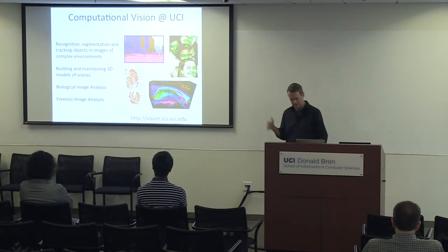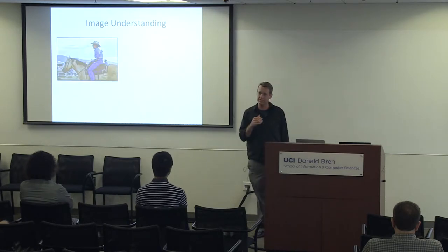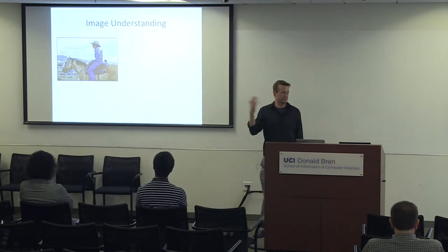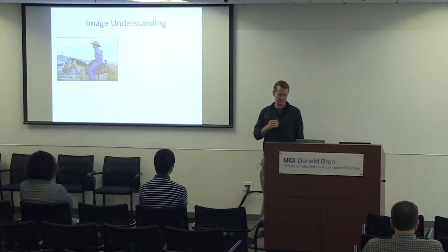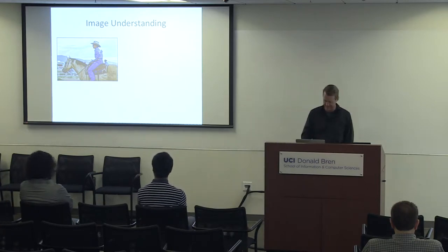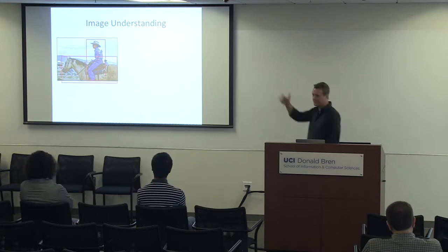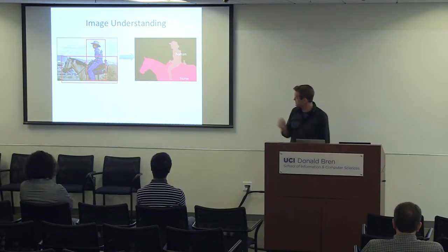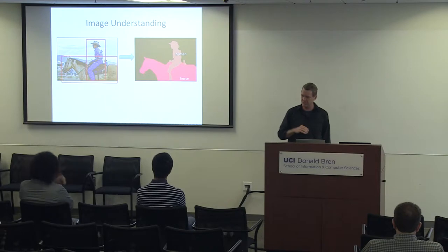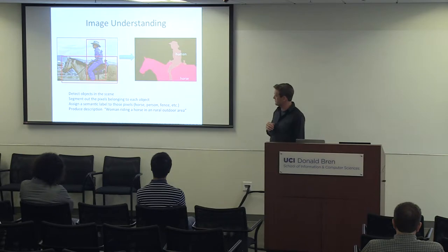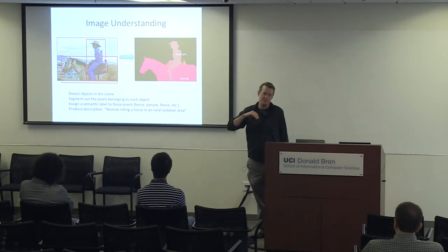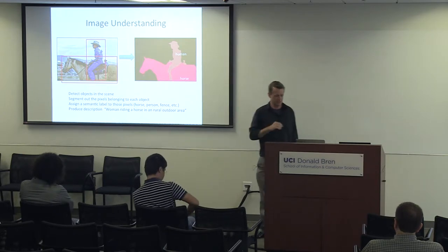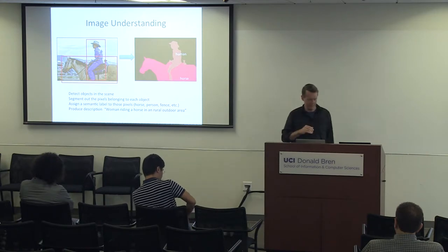What is this image understanding task? When we look at an image, we see lots of useful information that's possibly extractable. You might ask to find objects in the image, draw a box around them, or more carefully segment out which pixels belong to particular objects and assign them labels, or provide more general descriptions of the scene — not only what's in the image, but what's going on. For example: here's a person riding a horse in some rural outdoor environment.